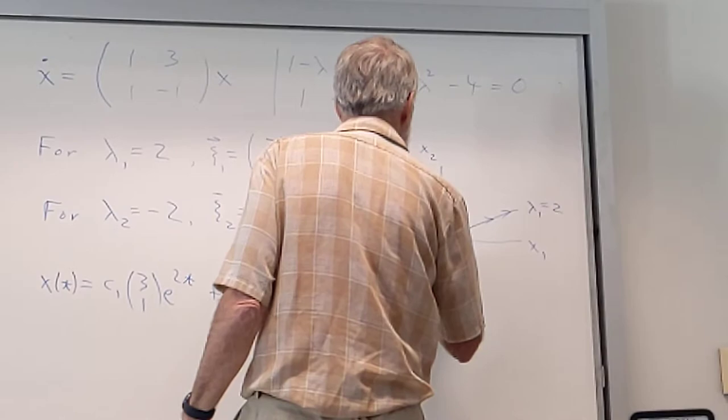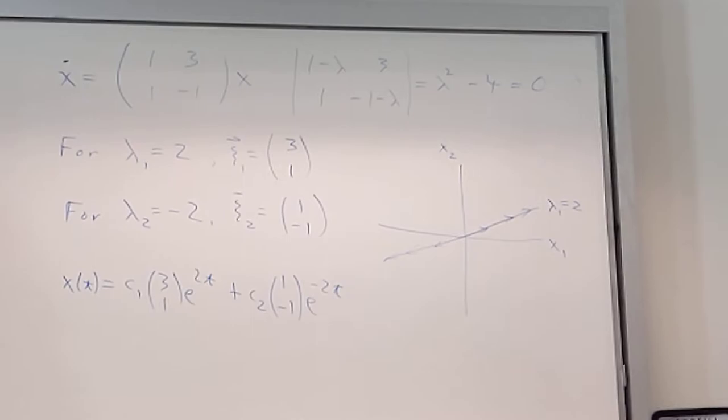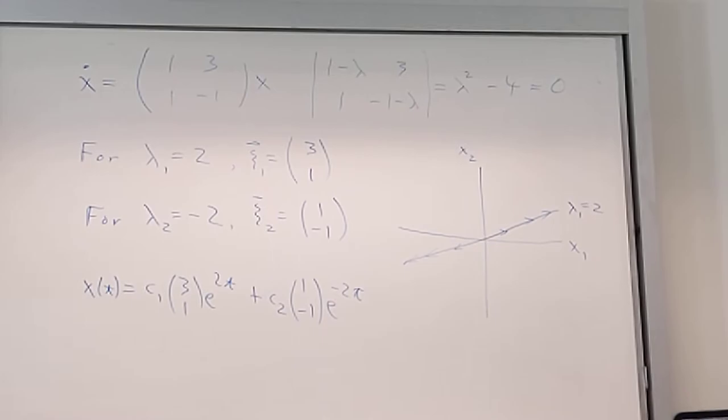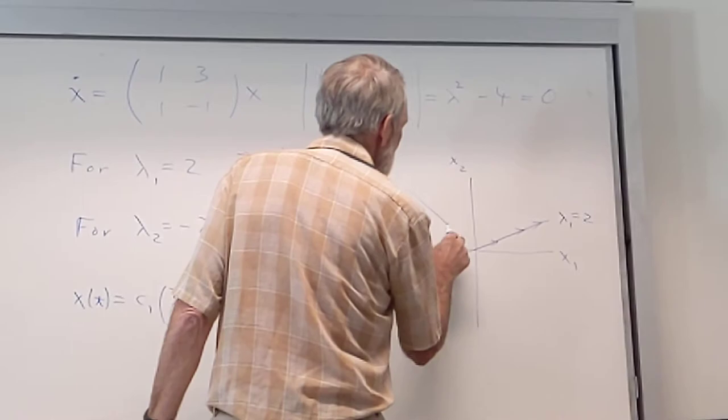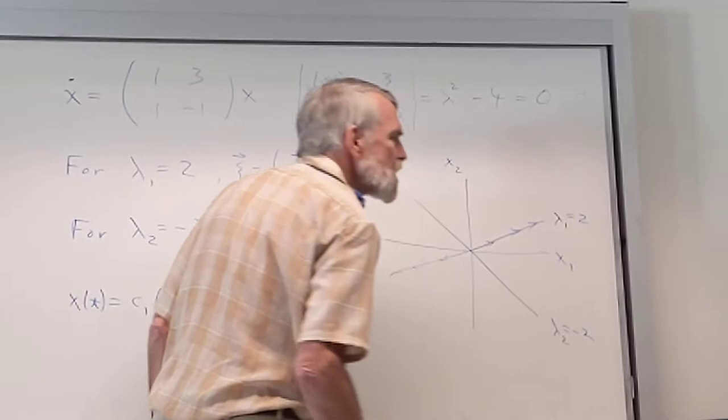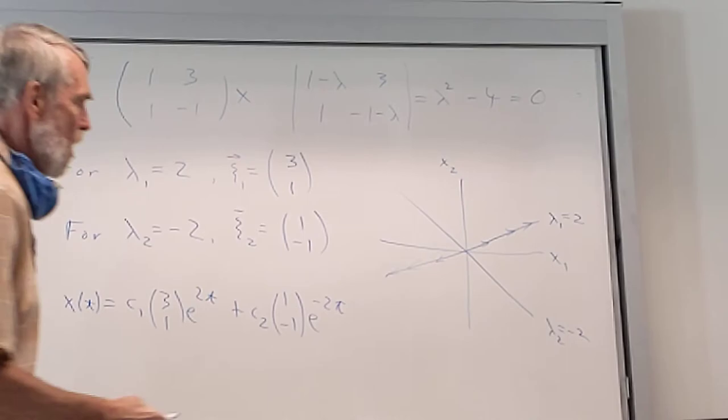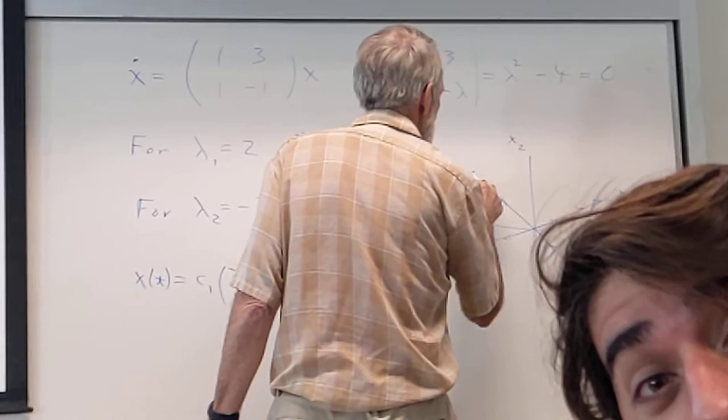What about (1, -1)? 1 in the x direction, minus 1 in the y direction. Alright, we're going to have a π over 4 angle going like that. That's with my lambda 2 equaling minus 2. And what direction do the arrows point on that? They're heading towards the origin. Alright. Exponential decay in this direction, exponential growth over there.